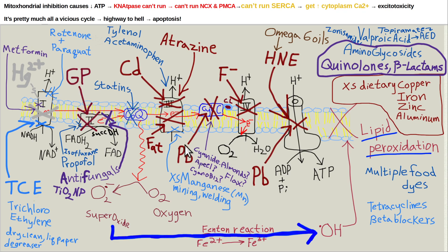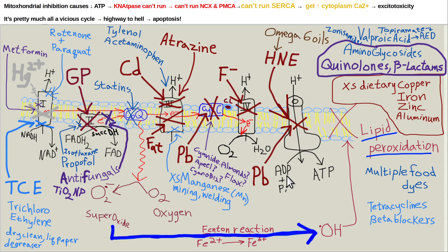This process produces a proton gradient. Complex 1, complex 3, and complex 4 all pump protons into the intermembrane space. There's an outer mitochondrial membrane and these protons accumulate in that space. Complex 5 is ATP synthase — it harvests the gradient allowing a proton to re-enter the mitochondrial matrix, and the energy from that is coupled to adding a phosphate to ADP, adenosine diphosphate, to make ATP, adenosine triphosphate.